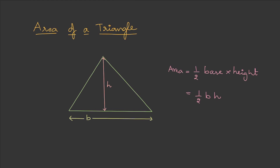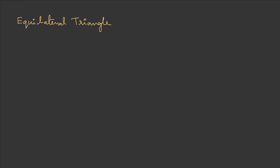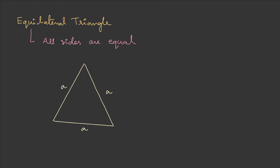Now let's look at different types of triangles. The first type is the equilateral triangle — a triangle with all sides equal. Here is a sample diagram where the sides of the triangle are a, a, a. The internal angles for an equilateral triangle are all 60 degrees.